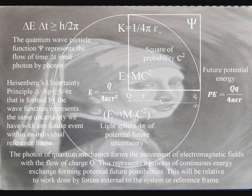In this diagram, instead of having zero in the center representing time equals zero, we have Q, representing charge. Instead of having a number line representing the future, we have a test charge, represented by a little Q. The future is represented by potential energy in the form of voltage acting on a charge to move the charge from one point to another point.